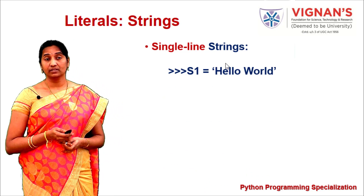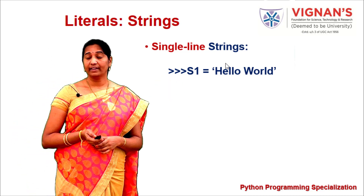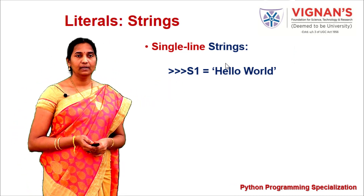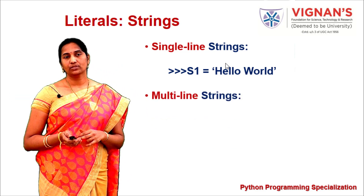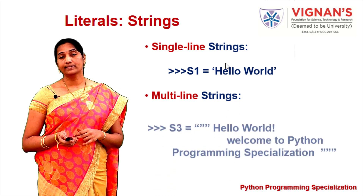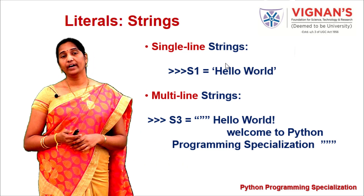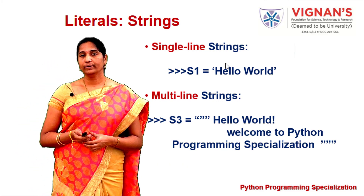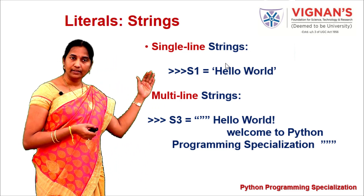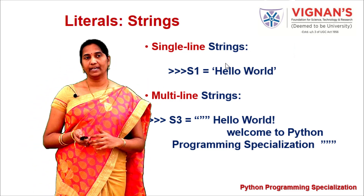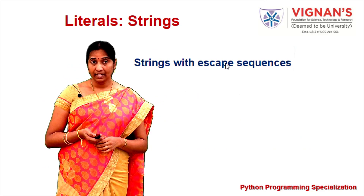Strings can be single-line or multi-line. A single-line string is created like s1 = 'hello world' on one line. A multi-line string can be enclosed in triple quotes, where the string extends across multiple lines, or you can use the continuation character (backslash) to indicate the string continues on the next line.